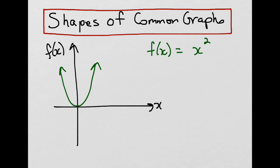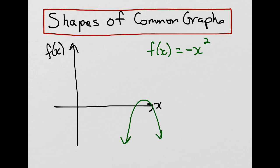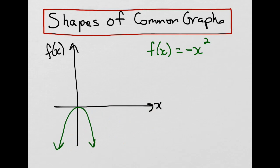What happens if we change some of the parameters? If we put a negative in front of the x², the graph simply flips over, so it points down instead of up. On the grid, it will still go through the point (0, 0), but it will be pointing down instead of up.